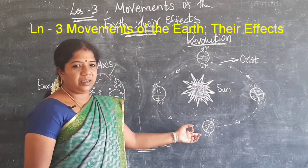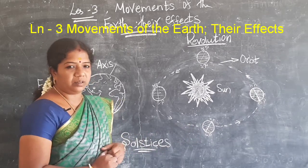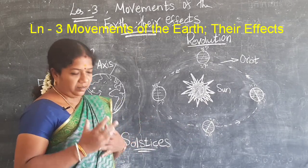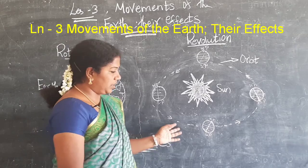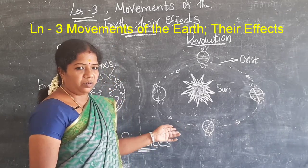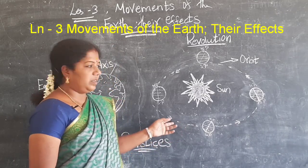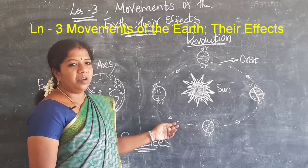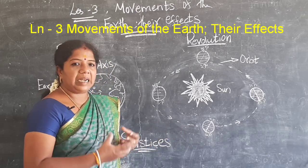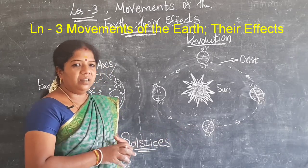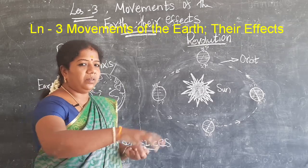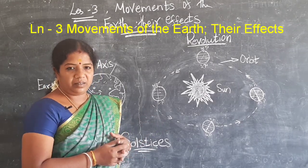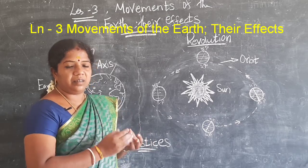To complete one revolution, the earth takes 365 and a quarter days. Like the earth, other planets also revolve around the sun, but the time may vary because of the distance from the sun.